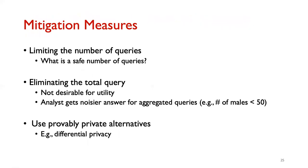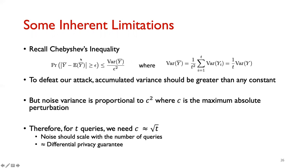For mitigation, limiting the number of queries is one option but it's not clear what a safe limit is. Another option is to eliminate the separate total query — not adding fresh noise to totals — which was exploited by both attacks, but this reduces utility since analysts would get noisy answers for aggregated queries. We recommend provably private alternatives like differential privacy, which quantifies privacy risk as a function of the number of queries asked.